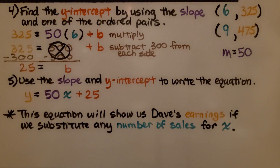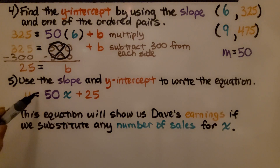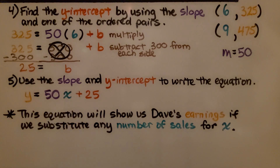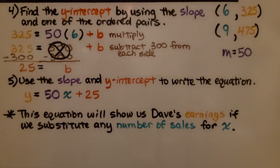That's all that's left in the equation. We use the slope and y-intercept to write the equation: y = 50x + 25. This equation will show us Dave's earnings if we substitute any number of sales for x.